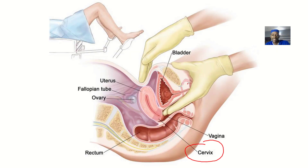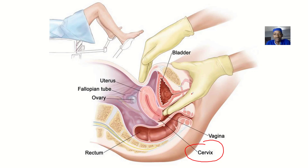Now you can see how you put your hand — one inside and one outside. If both hands can't get in, you could use just one hand, then you move it. That's a cervix motion.